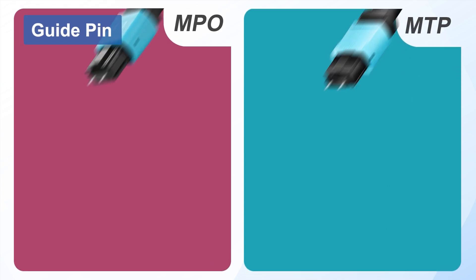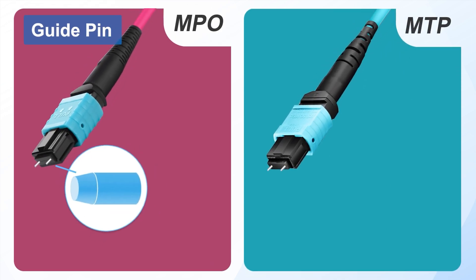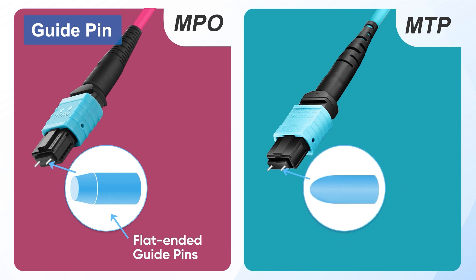Second are the guide pins, which are crucial for mating alignment. MPO's flat-ended guide pins tend to collide during connection, causing wear and flaking. Over time, this compromises alignment precision. MTP connectors use upgraded elliptical stainless steel guide pins, reducing debris accumulation in pinholes or on ferrule end faces.